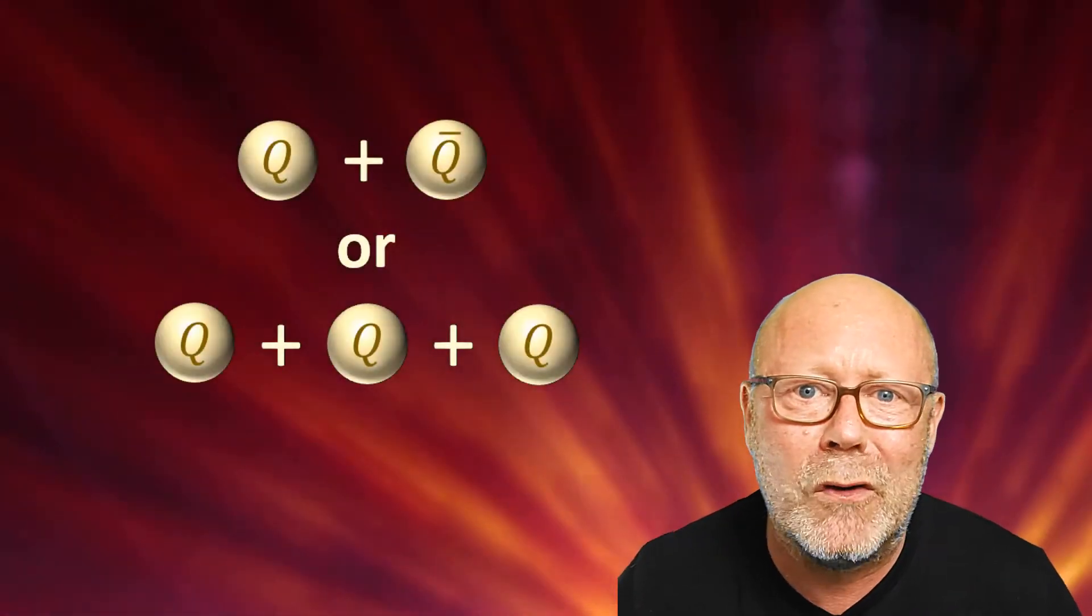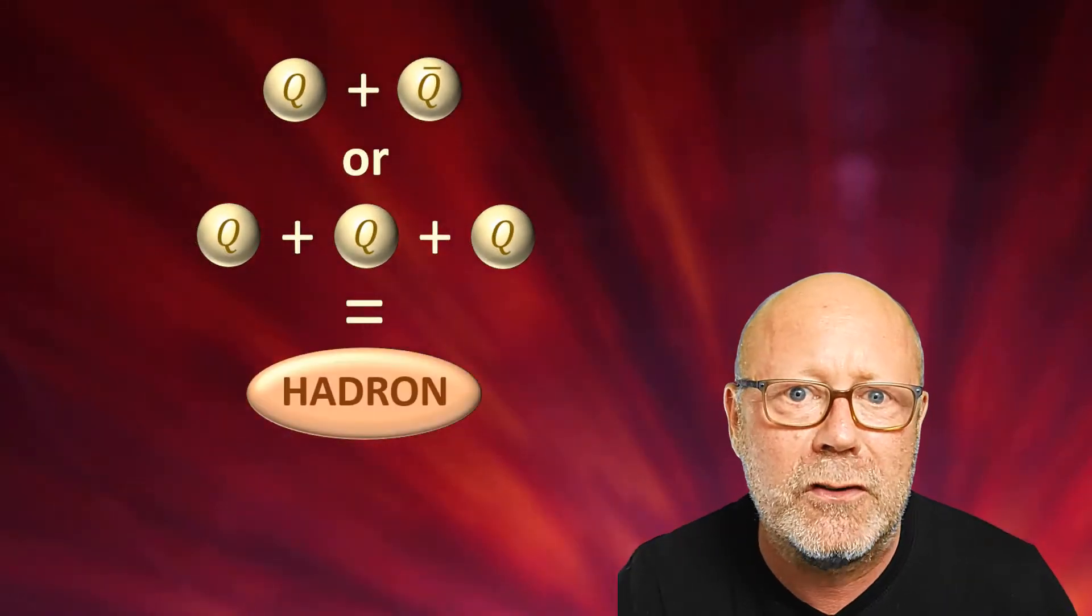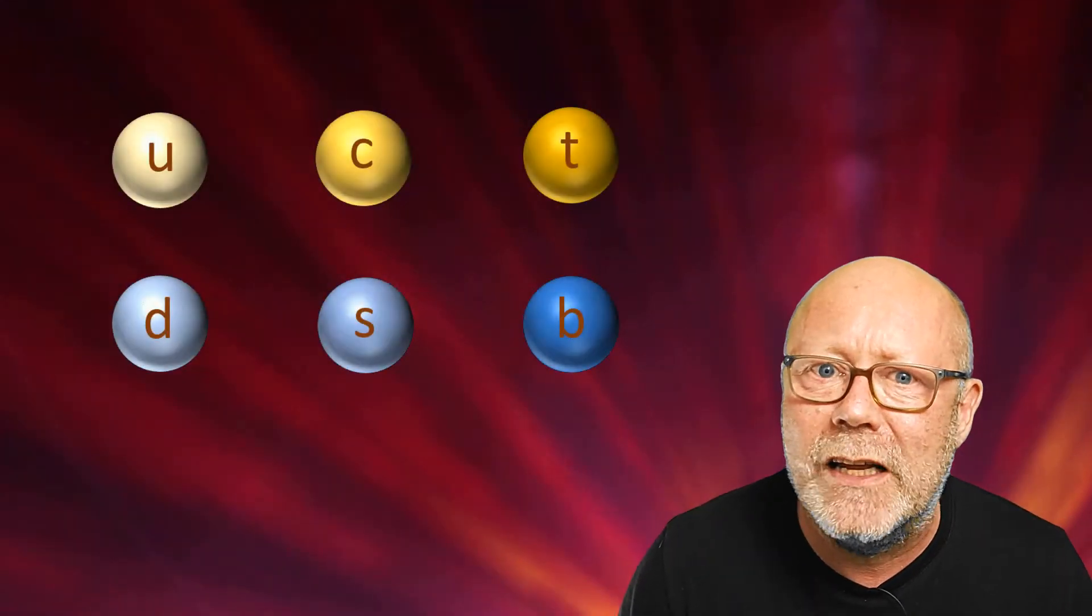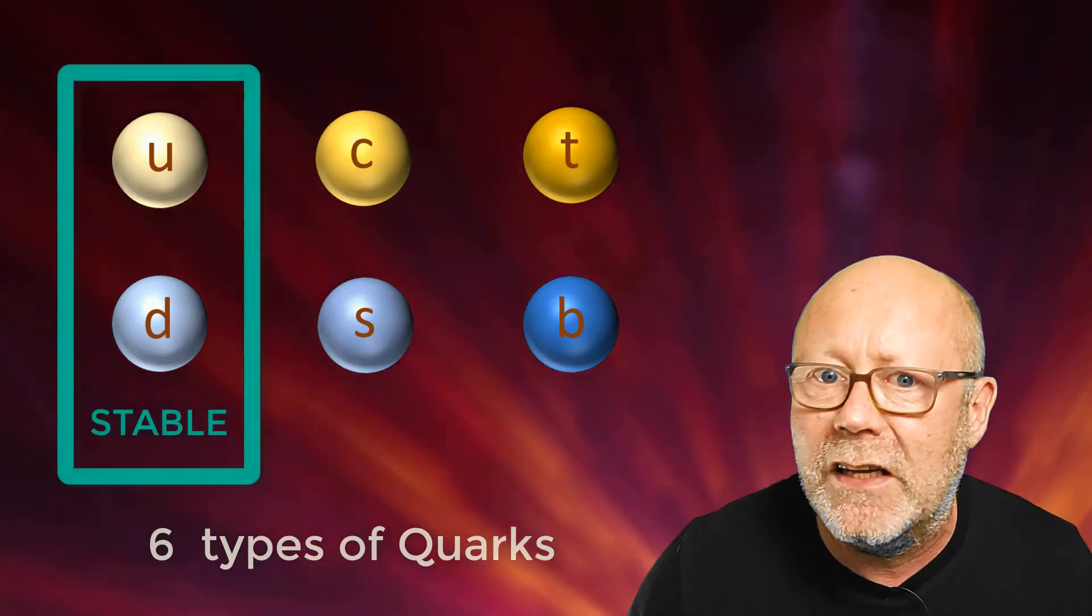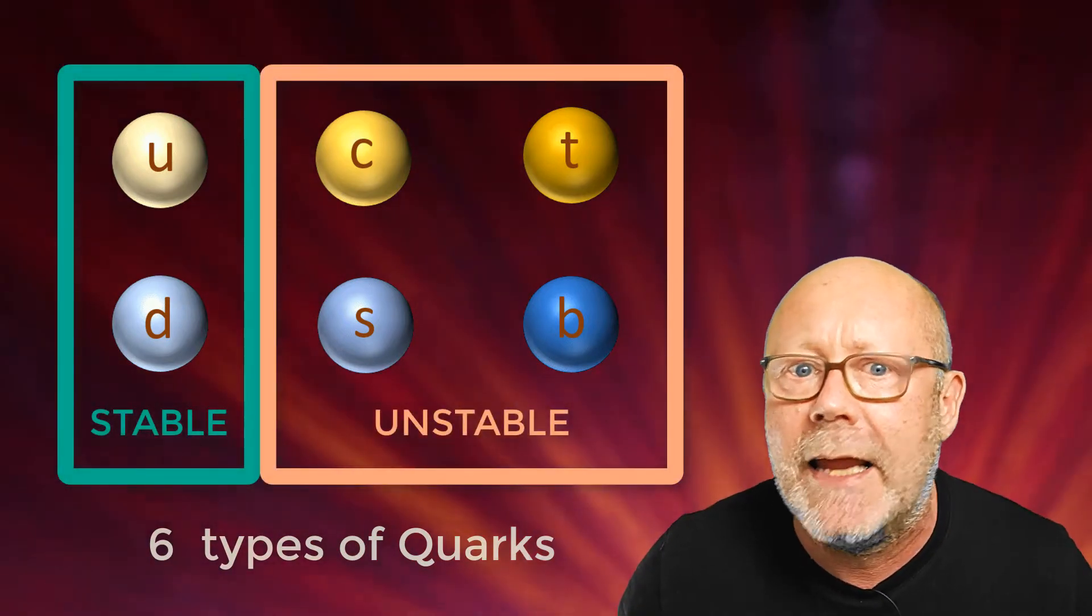When you combine quarks together, you form composite particles called hadrons. There are six types of quarks, but only the up quark and the down quark exist at temperatures we find typically in the universe.